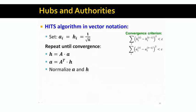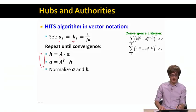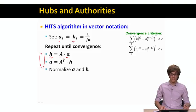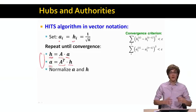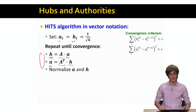Having expressed the equations in vector-matrix form, the full HITS algorithm initializes A and H with values one over square root of n, then repeats the following loop until convergence: first update H by computing A times vector A; then update A by computing A-transpose times H. Convergence means the individual coordinates of vectors A and H do not change too much between iterations.